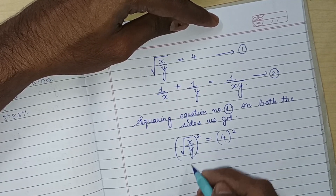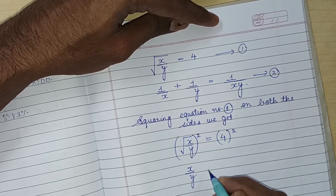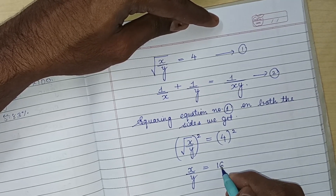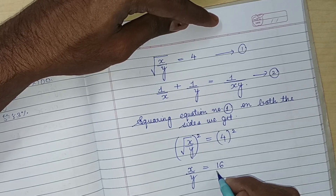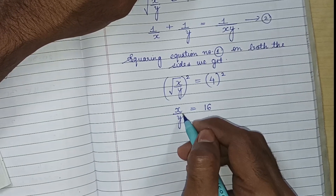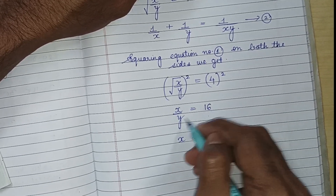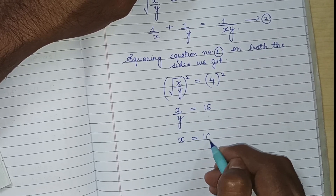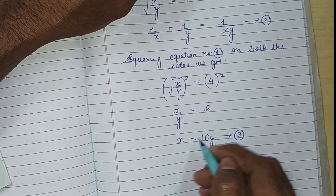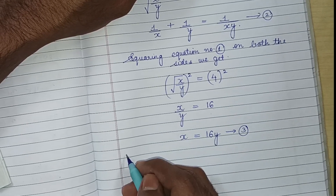When we square, the square root and the square cancel out. So x is equal to 16 into y. This becomes equation number 3.